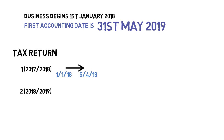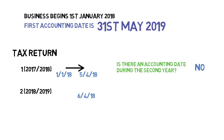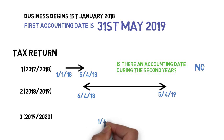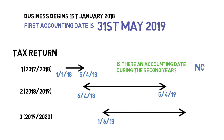Now we must ask ourselves the first question: is there an accounting date during the second tax year? The second tax year runs from the 6th of April 2018 to the 5th of April 2019. The accounting date isn't until after that tax year, so the answer is no. It means the basis period for the second year is aligned to the tax year. The accounting date falls in year three, and the basis period now must align with the accounting year. So the basis period relevant for the third tax return is the period from the 1st of June 2018 until the 31st of May 2019.